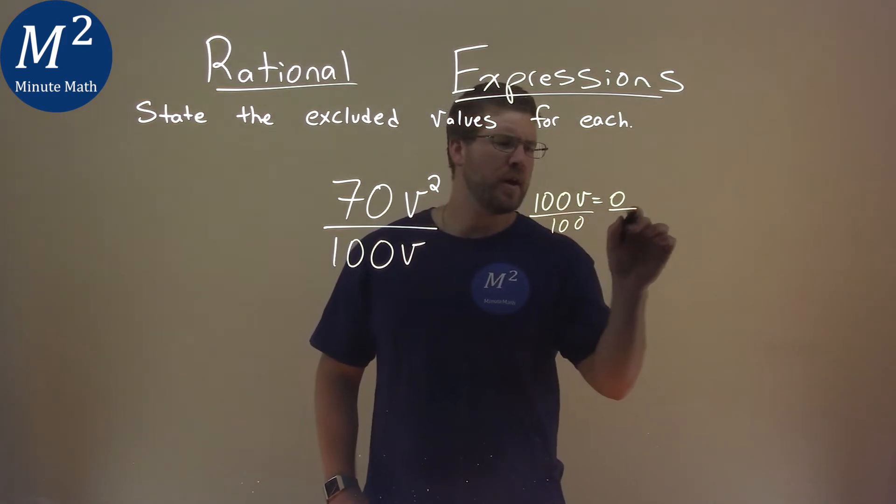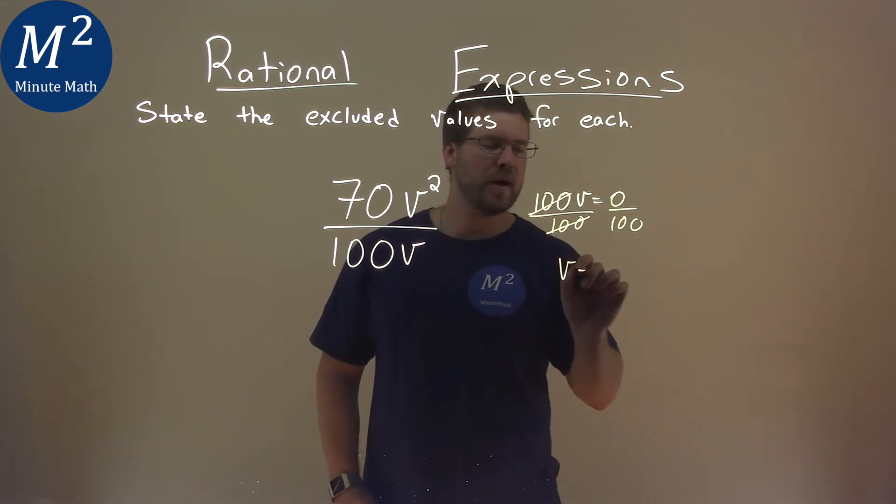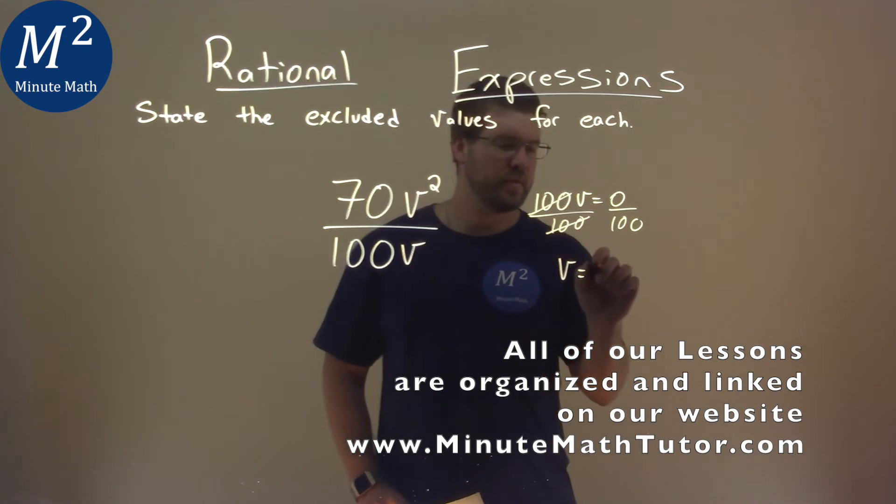Divide by 100 on both sides, our rules still apply. Hundreds cancel, and we have v by itself. Zero divided by 100 is just zero.